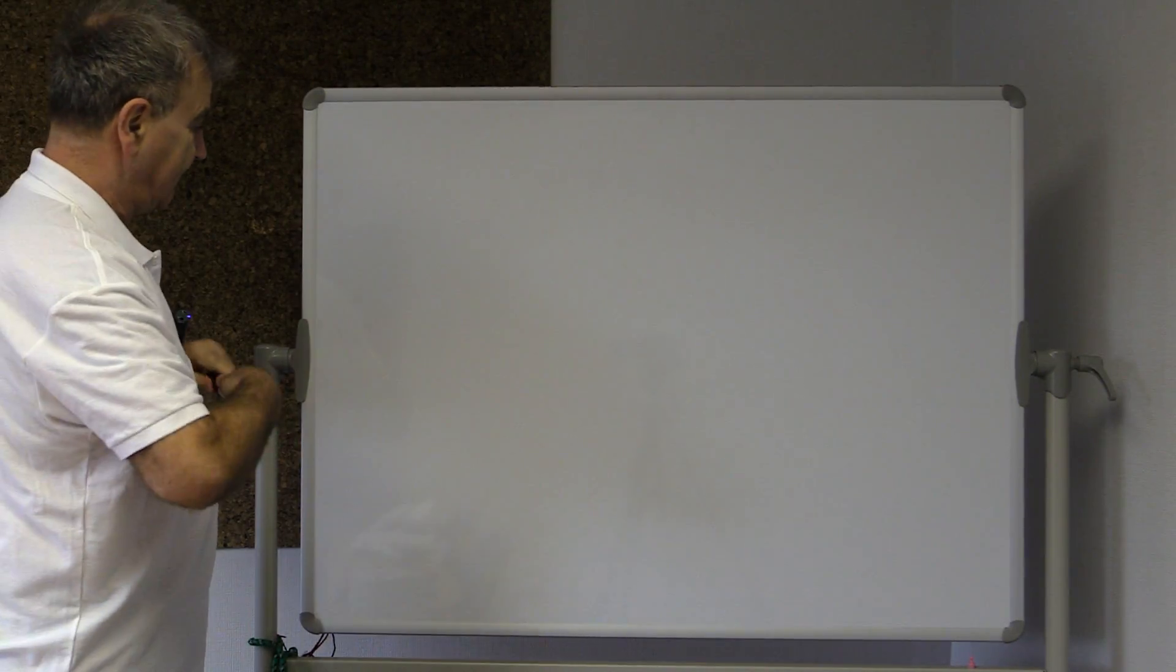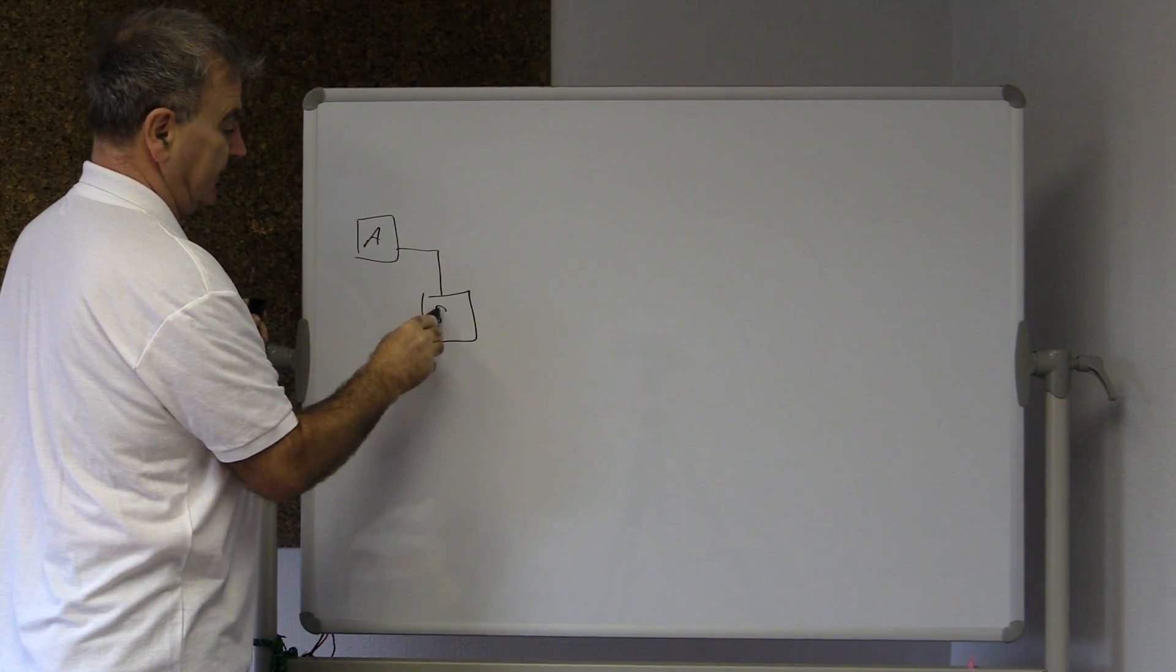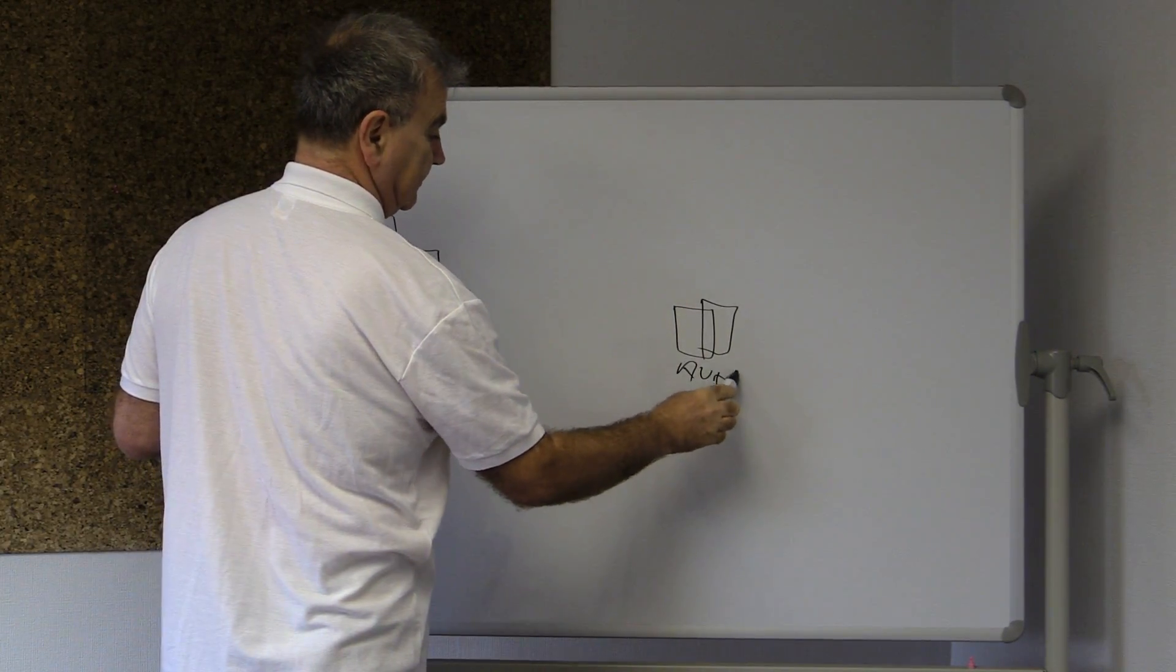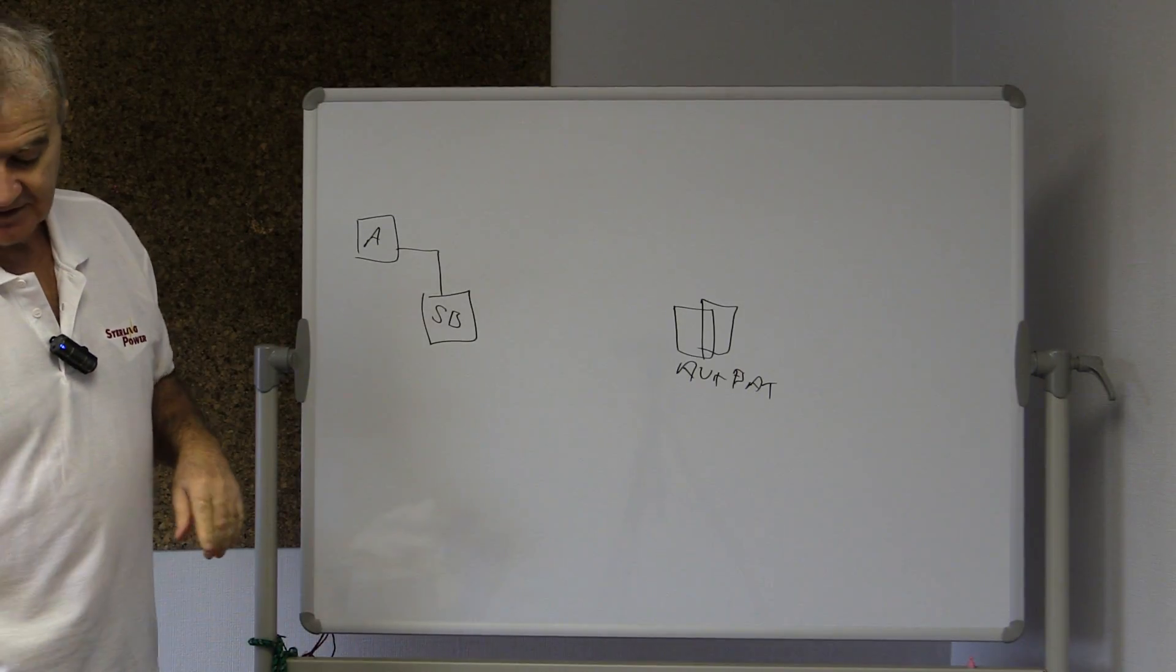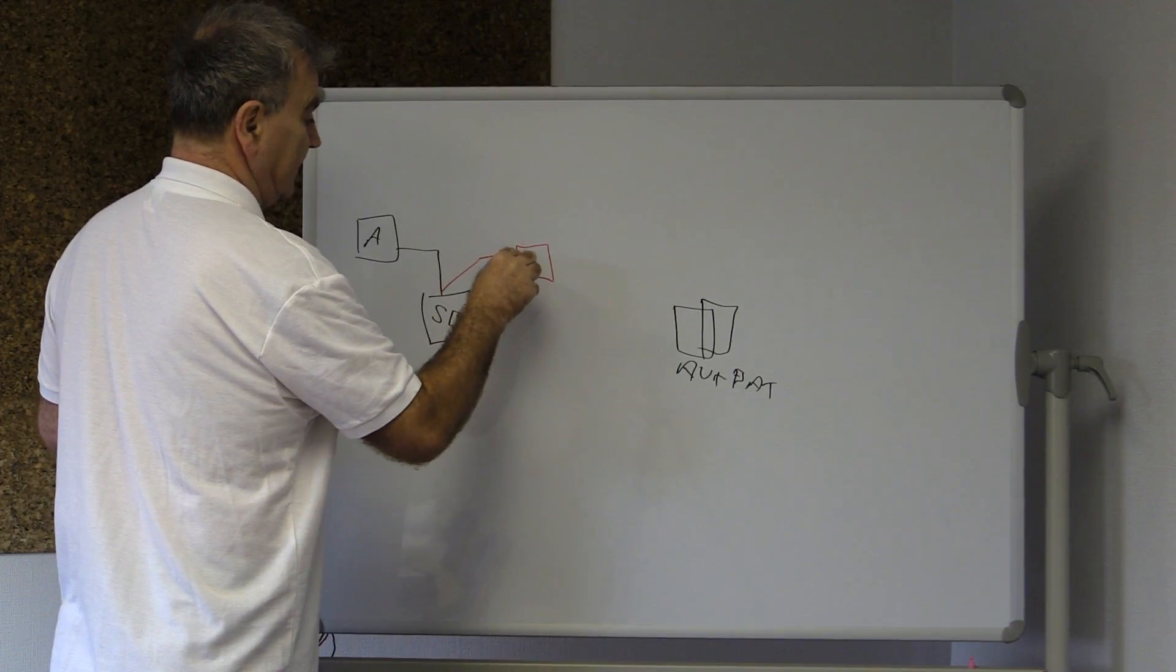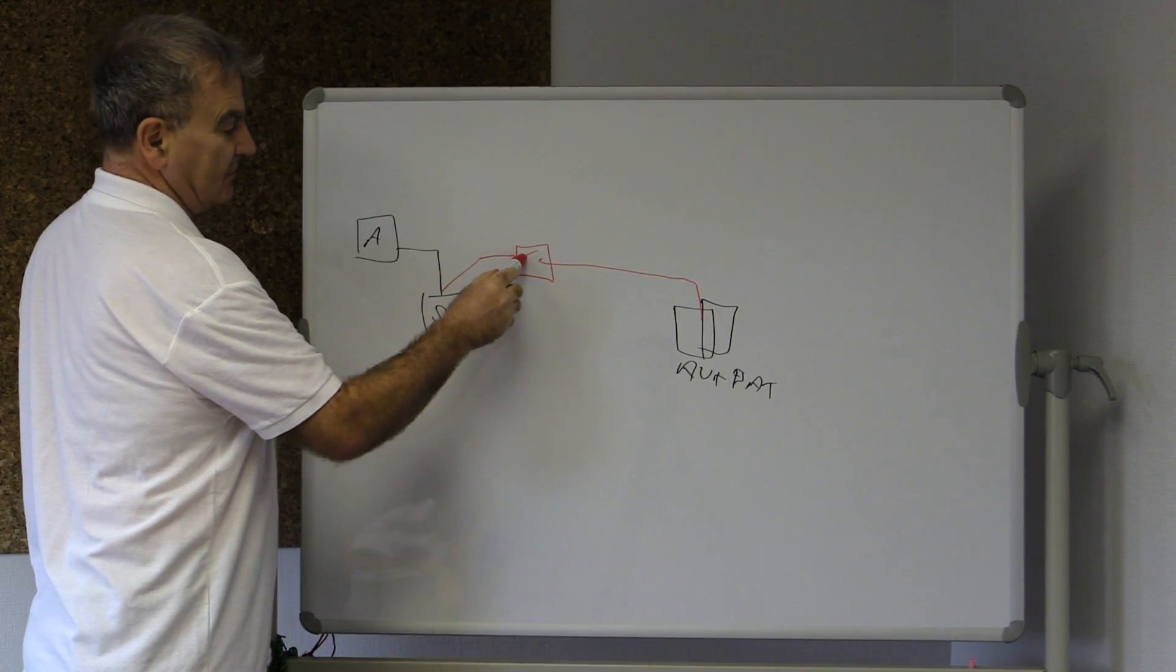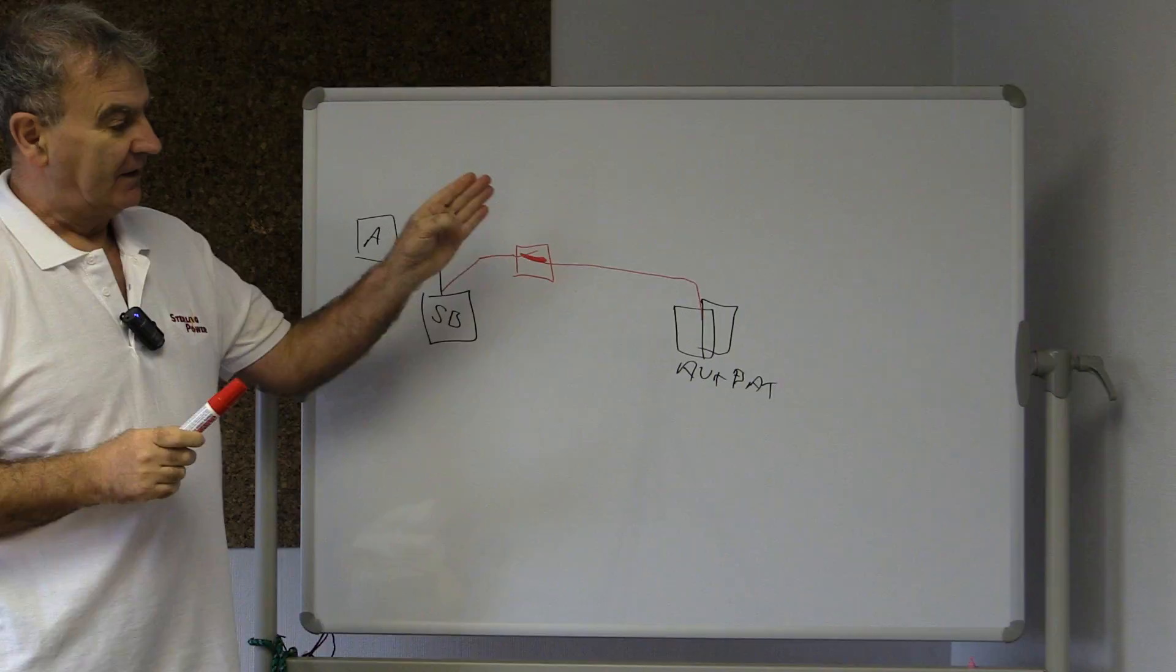Let's start off with what split charge relays are actually doing. You have your alternator here, which goes to your starter battery here. Then on your camper van, you have your secondary battery system, be it one or two batteries - that's the auxiliary battery system. What a split charge relay does is really very simple. You simply come off your starter battery to the split charge relay.